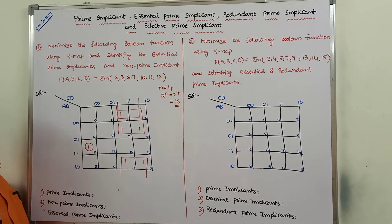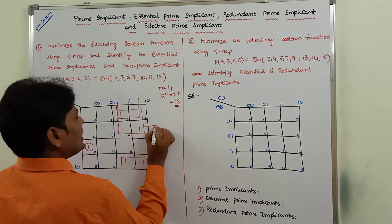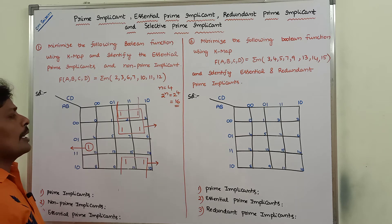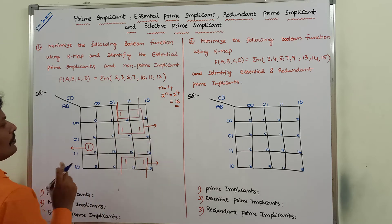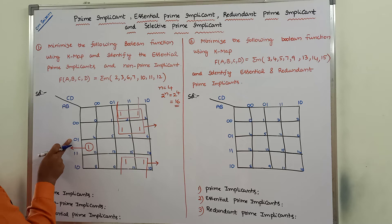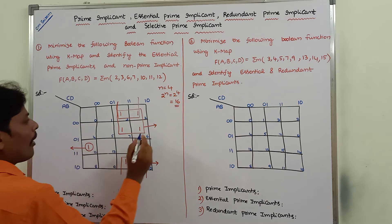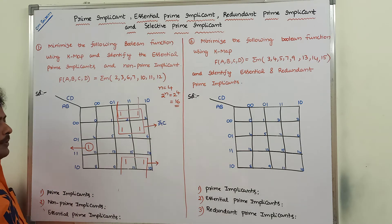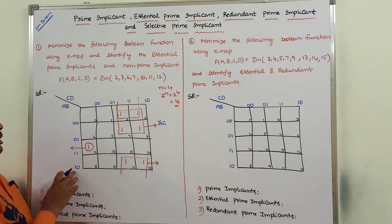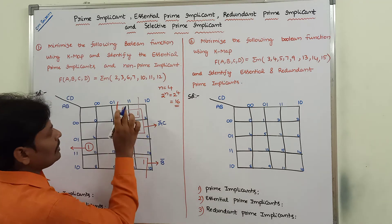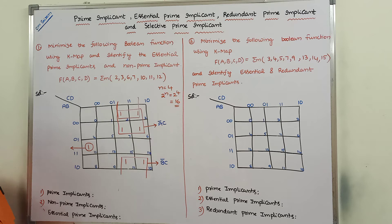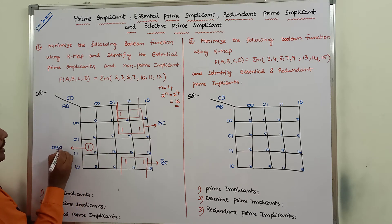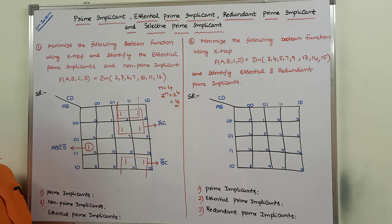Next, priority is given to quads — adjacency of four ones. These four ones here can be formed as a quad — they are adjacent and form a square. For the remaining ones: these two ones and these two ones can be combined by folding the Karnaugh map from bottom to top, forming a quad. Similarly, another pair of two ones and two ones forms another quad. Only one remaining single one exists, and it cannot be combined with any other — hence it is a single one. We are getting three expressions: one for this quad, one for this quad, and one for this single one.